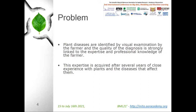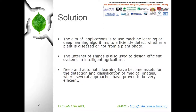In order to overcome this problem, artificial intelligence and image processing have been used to propose systems for plant disease recognition and detection. The aim of such applications is to use machine learning or deep learning algorithms to efficiently detect whether a plant is diseased or not. The Internet of Things is also used to design efficient systems in intelligent agriculture. Deep and automatic learning have become key tools for the detection and classification of medical images, where several approaches have proven to be very efficient.